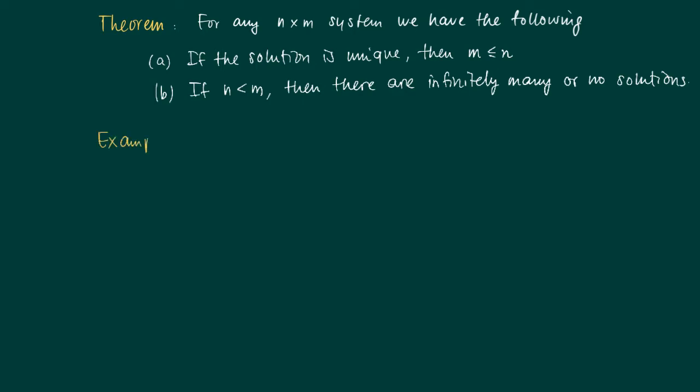We'll illustrate this using the following example. Consider the next system, where we have four variables and three equations. The number of columns is smaller than the number of equations, so we're in case B: we have no solution or infinitely many.